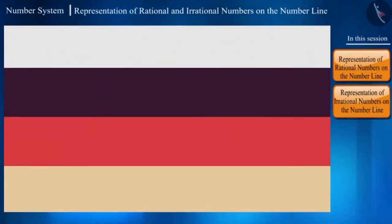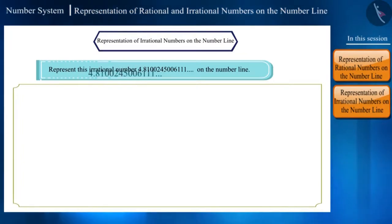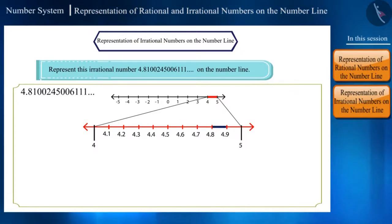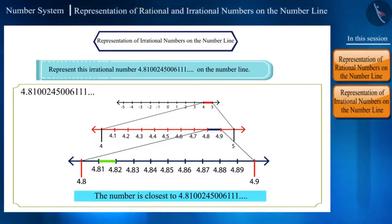Let's take an example. Represent this irrational number 4.8100245006111 on the number line. This number will lie on the number line somewhere between 4.81 and 4.82. Friends, here the numbers are non-terminating and non-repeating after the decimal. Hence, even here we will not be able to precisely spot the number but we can still come to its closest point.